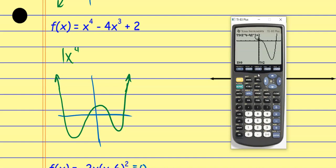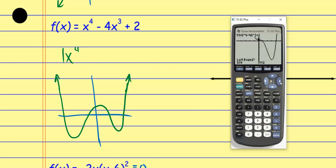So I go Second, Calculate, and choose Minimum — number 3. Left bound, right bound, guess. I scroll down towards this minimum: to the left, Enter; to the right, Enter; then get as close as possible and hit Enter. It gives me 3.000013, negative 25. The calculator sometimes has a little bit of trouble — we're narrowing it down, so there's a little round-off error. It really means exactly (3, −25). I write that ordered pair down.